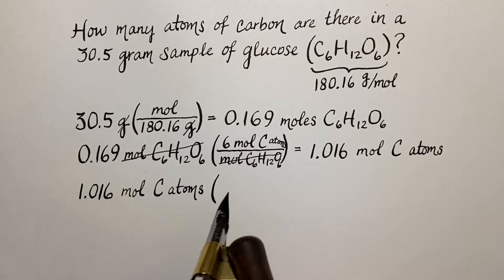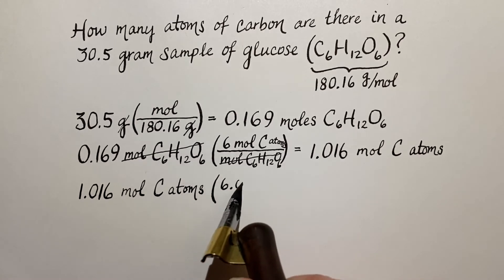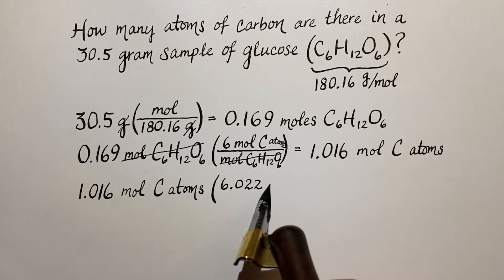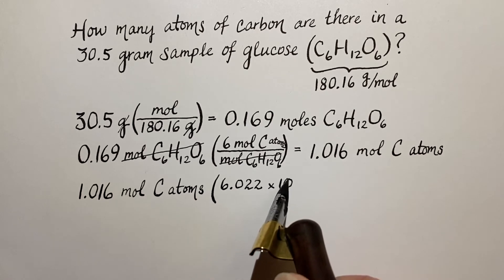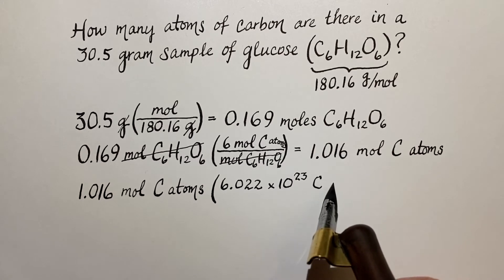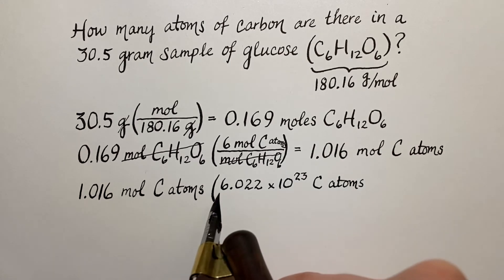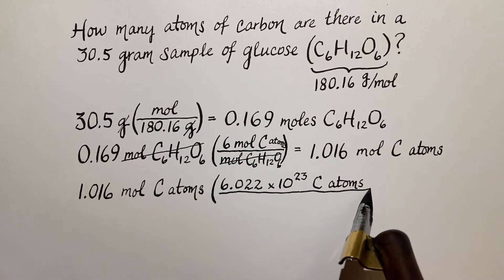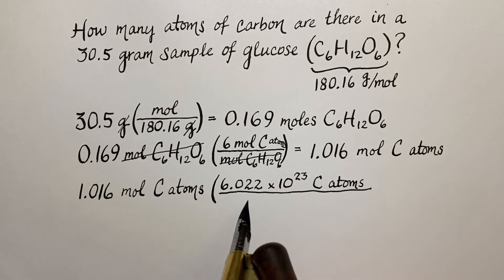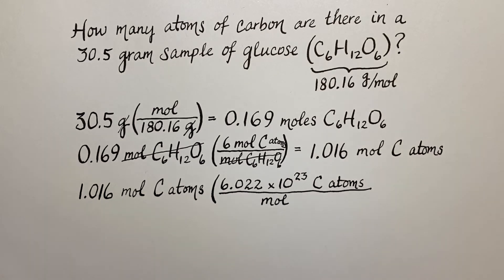So here is where we've got, again we can think of this as a ratio. I'm going to write it out this way: there's 6.022 times 10 to the 23rd carbon atoms for every mole, or in other words per mole of the carbon atoms.